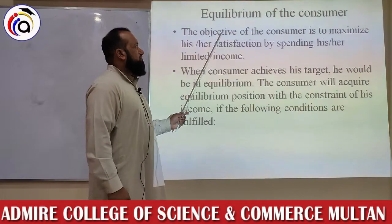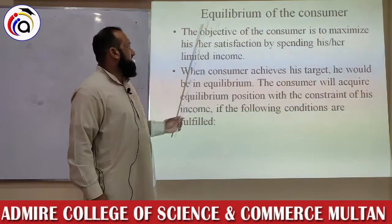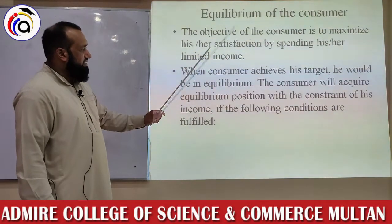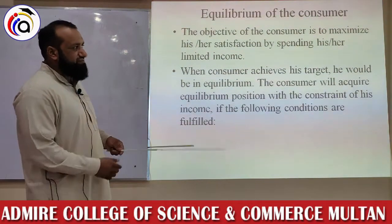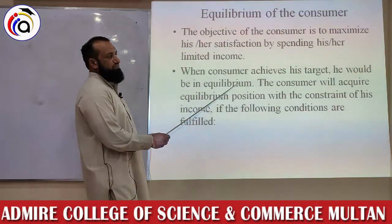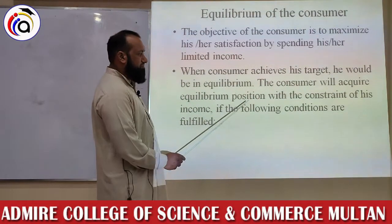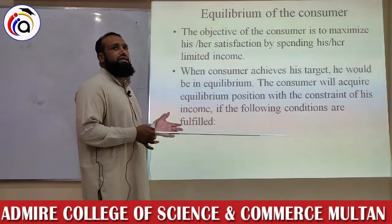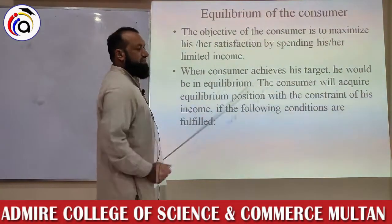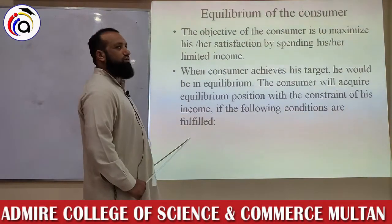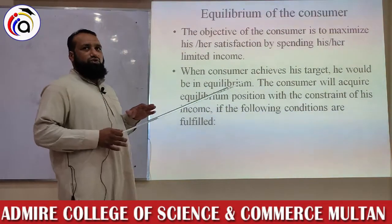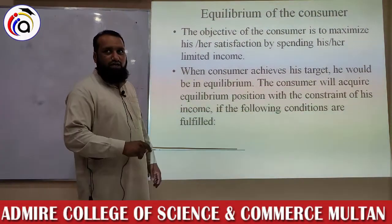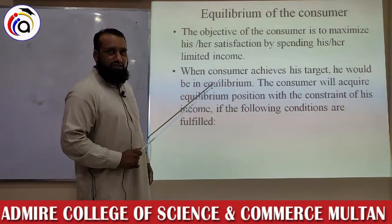The ultimate objective is consumer equilibrium. The consumer's objective is to maximize his or her satisfaction by spending his or her limited income. When the consumer achieves this target, he is in equilibrium — constrained by his income, which is limited. If the following two conditions are fulfilled, consumer equilibrium is achieved. Both conditions are given on the next slide.